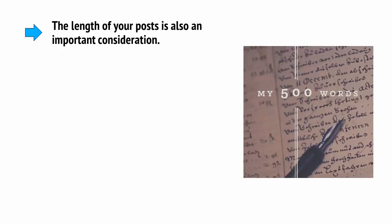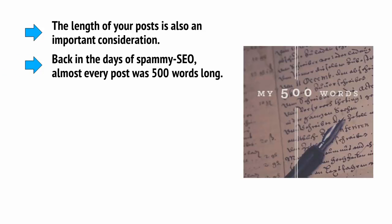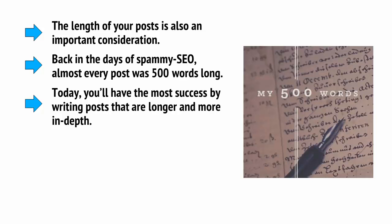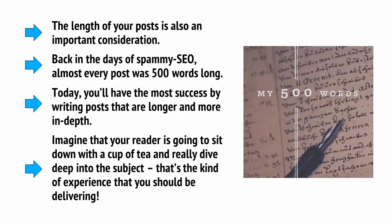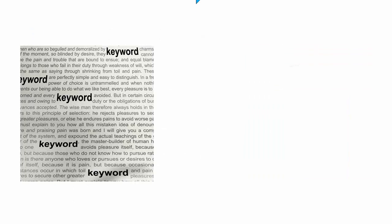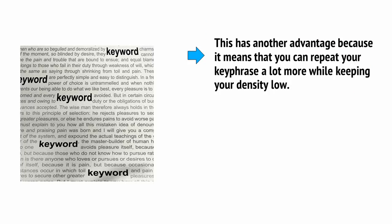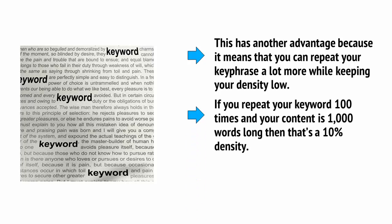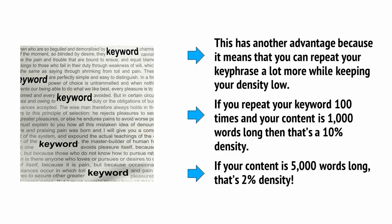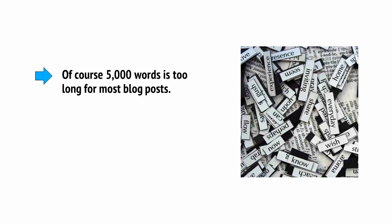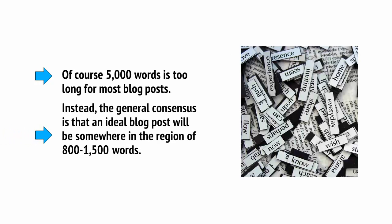The length of your post is also an important consideration. Back in the days of spammy SEO, almost every post was about 500 words long. Today, you'll have the most success by writing posts that are longer and more in-depth — imagine your reader sitting down with a cup of tea and really diving deep into the subject. Longer content also lets you repeat your keyphrase more while keeping density low. For example, 100 repetitions in 1,000 words is 10% density, but in 5,000 words that's only 2%. The general consensus is that an ideal blog post is somewhere in the region of 800 to 1,500 words.